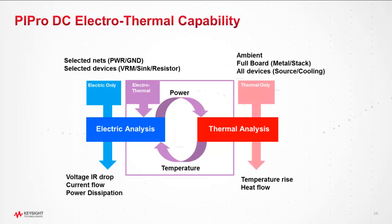This flowchart shows what happens behind the scenes when running electrothermal simulation. First, electrical analysis is performed; its output is fed to thermal analysis as a heat source. After thermal analysis, the temperature information is fed back to electrical analysis. This loop continues until a steady-state condition is obtained.